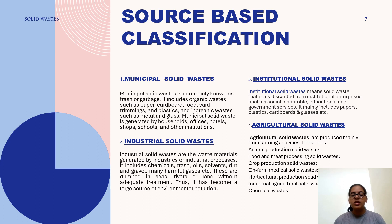Next, agricultural solid waste. These are mainly produced from farming activities and include animal production waste, food and meat processing waste, crop production waste, on-farm medical waste, horticultural production waste, industrial agricultural waste, and chemical waste.